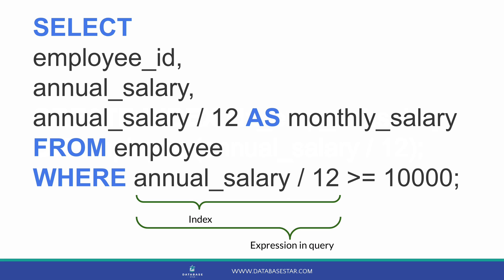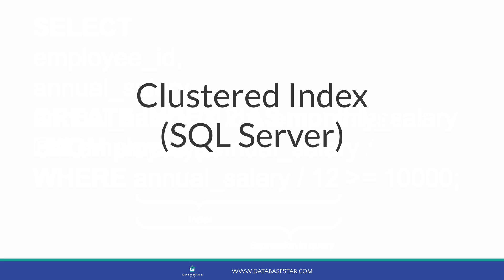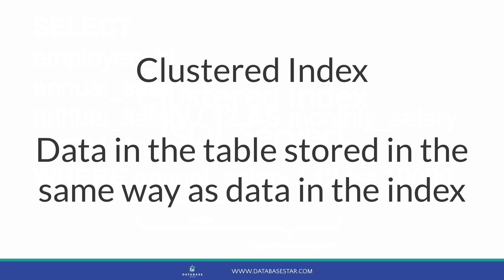Some other situations where you may want to create a function-based index are if you're comparing strings using upper or lower functions, or if you want to limit data based on a specific date component, such as dates within a month. If you work with SQL Server, you may have heard of another type of index called a clustered index. This is a type of index that defines how the data is stored for the table — a clustered index specifies that the data in the table is stored in the same order as the data in the index. This means it's faster to retrieve the data when a clustered index is used, because there's less for the database to do. The drawback is that there can be only one clustered index on the table. The alternative is to create a non-clustered index, which is the default type of index we saw earlier.